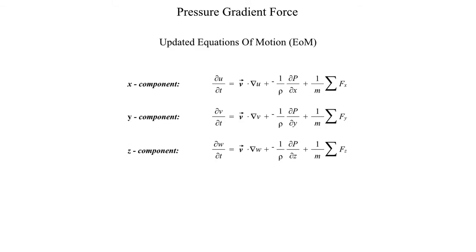If we want to incorporate all that into our equations of motion, we can update those. The zonal component gives us du/dt equals minus v·∇u plus minus one over rho times dp/dx — that's the x-component of the pressure gradient force — and similarly for the y and z components. There should be negative signs in front of the advection terms. We still have the sum of all mass-normalized forces, which we will continue to add to as we progress through the class, talking about the Coriolis force, centrifugal force, and others.